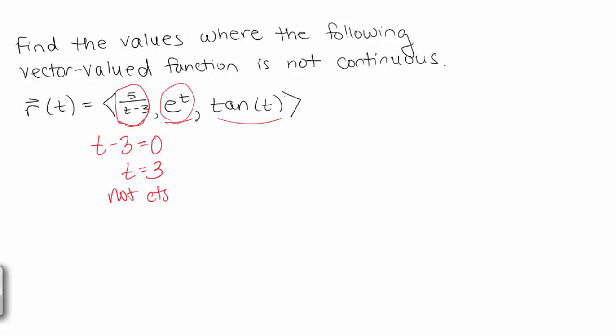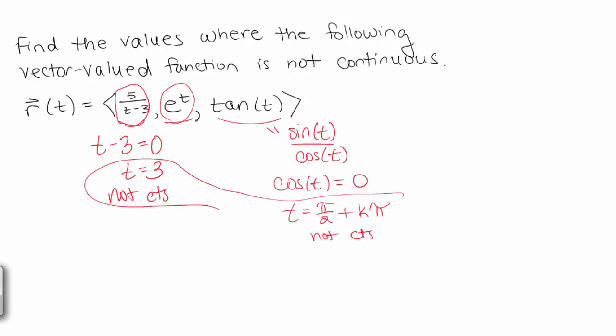And then tangent, remember tangent is really sine over cosine. So tangent is not continuous whenever cosine equals 0. And remember that's going to be t equals pi over 2 plus k pi. So you put these all together and that's all the points where your vector valued function is not continuous.